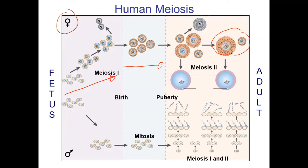In males, the gonads develop in the fetus and those cells reproduce by mitosis. The testicles are formed but don't really get active and produce sperm until puberty. Then when puberty happens, meiosis I and II happen on a continual basis. So a man is going to be fertile on any given day once he hits puberty. That's human meiosis.